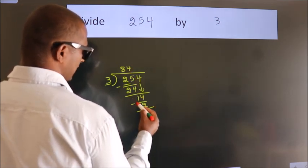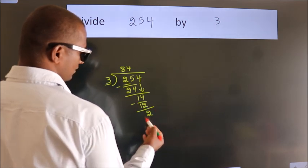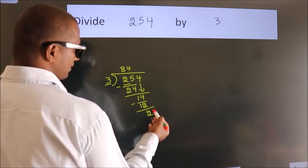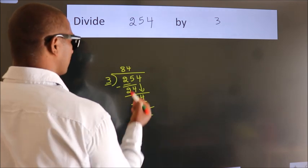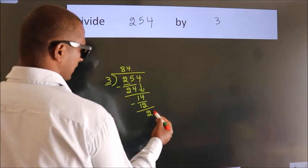Now, we subtract. We get 2. After this, no more numbers to bring down. So what we do is, we put a dot and take 0.